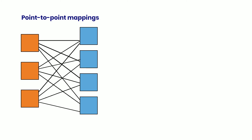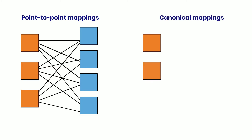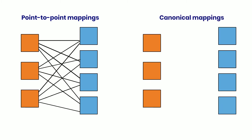A canonical data model is a central model that holds all the entities and attributes used in all the integrations, including the proper naming and data types that are used inside the client environment.